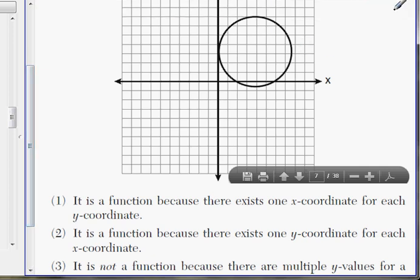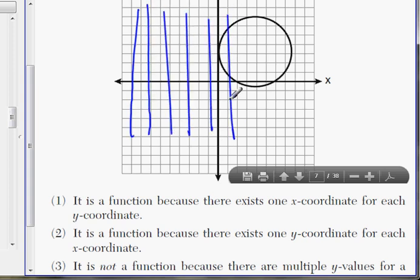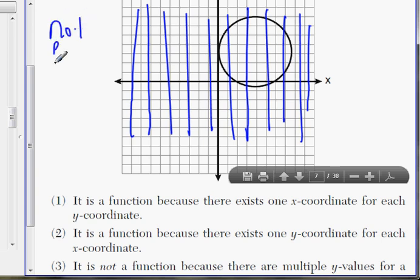And the way we test if it's a function is we use something called the vertical line test. We draw a bunch of vertical lines, random vertical lines, that goes through the shape we have here, or line, or curve. And the rule is, if any of these lines, even one, any of these lines touches two or more points on the curve, then it's not a function. So not a function if it's two or more points.